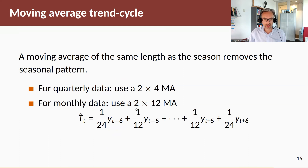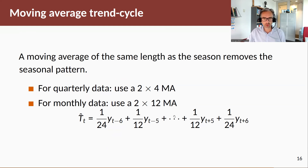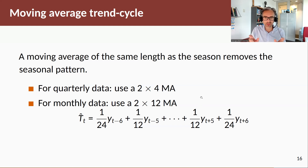For a 2×12 moving average, we have averages across the 10 observations from Yt minus 5 to Yt plus 5, but also included in that average will be one twenty-fourth of Yt minus 6 and one twenty-fourth of Yt plus 6. So the effect of Yt minus 6 and Yt plus 6 is halved between the current year and the next year.